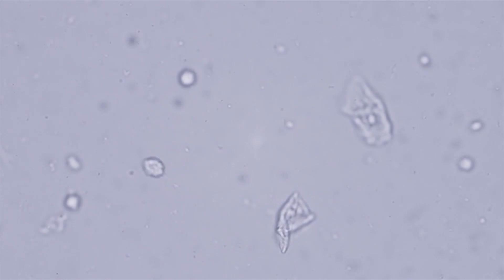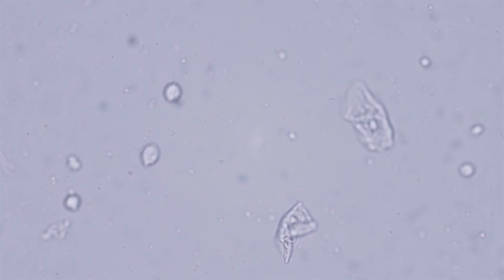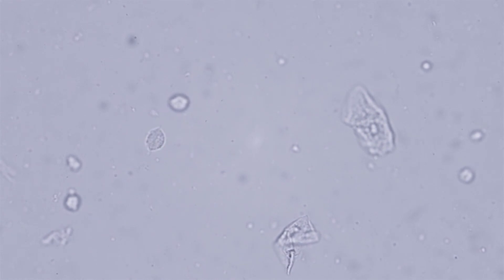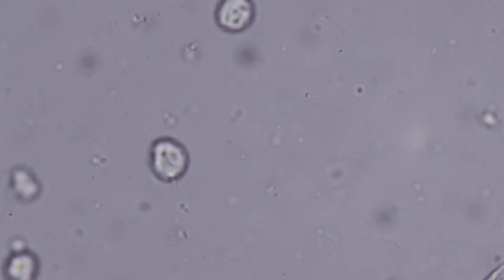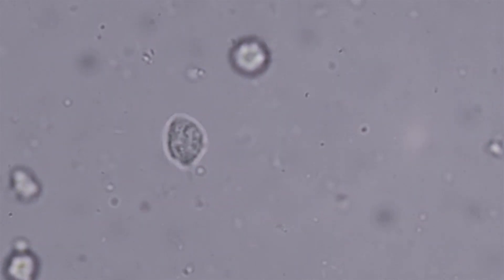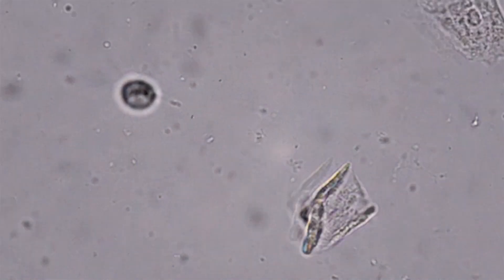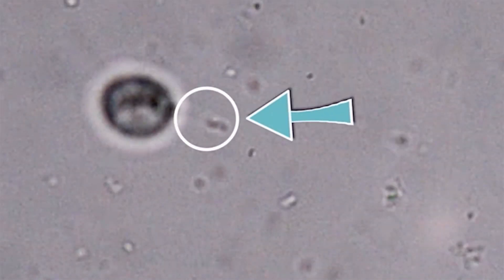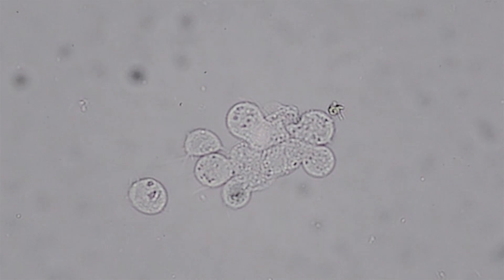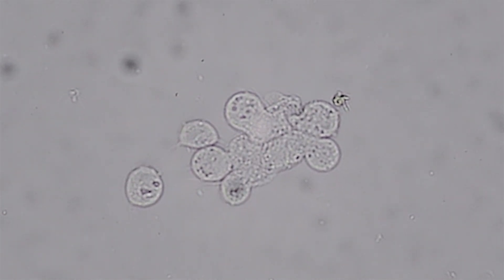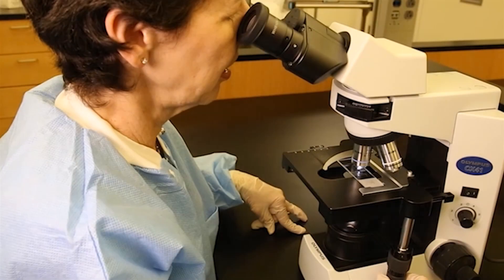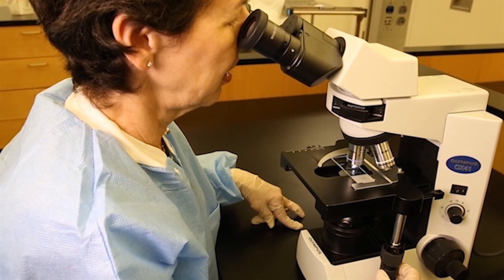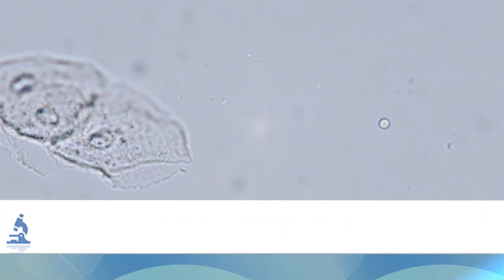As you look at the specimen under the 10x objective, you may notice movement. Switch to the 40x objective to identify whether what you are seeing is Trichomonas. Trichomonas appear as motile, pear-shaped protozoans approximately 10 to 20 micrometers in size. In fresh specimens, Trichomonas move by whipping their flagella and/or undulating membrane. A structure called the axostyle helps the organism attach to the vaginal wall. As time passes, some Trichomonas begin to round up and die — this is why the slide must be viewed within 15 minutes.